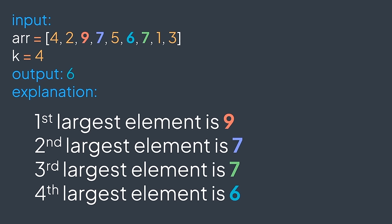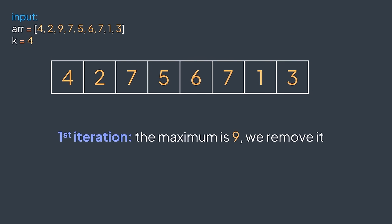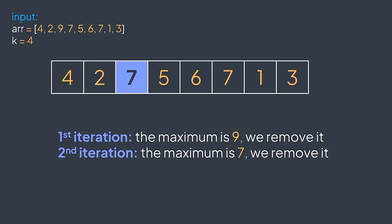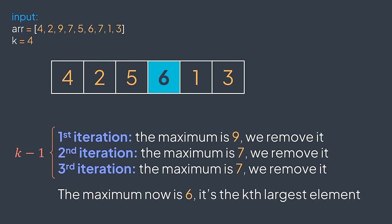The first possible solution is to remove the maximum element K-1 times — after doing so, the next maximum represents the Kth largest element. With our array and K=4, we remove the maximum three times: first max is 9 (remove it), second max is 7 (remove it), third max is 7 (remove it). Now the maximum in the remaining elements is the Kth largest — it's 6, we return it.